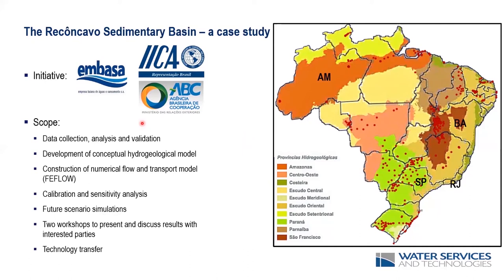This study was carried out in the sedimentary basin called Reconcavo, in the state of Bahia. On the right we have a map of Brazil with the main hydrogeological domains, including the Guarani aquifer shown in light green. Our study area is just north of Salvador, by the coast in Bahia state. This is a system of coastal sedimentary basins deposited as part of a large rifting process that occurred around the Jurassic period.